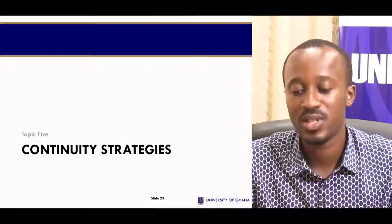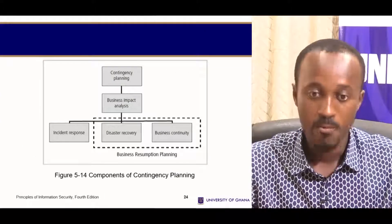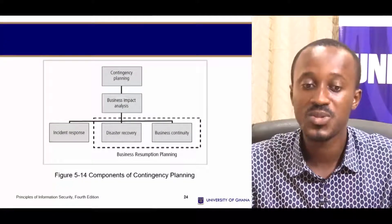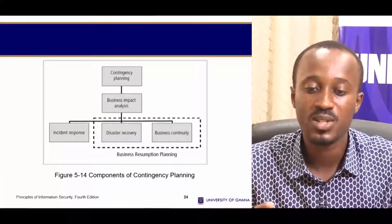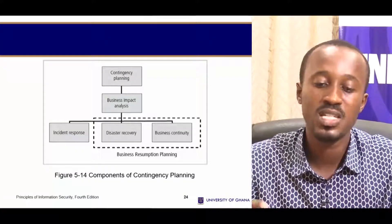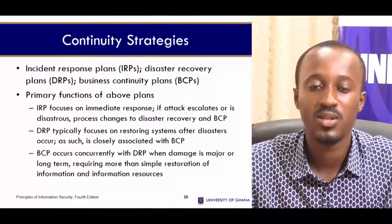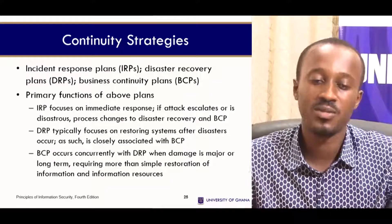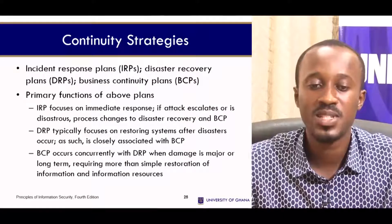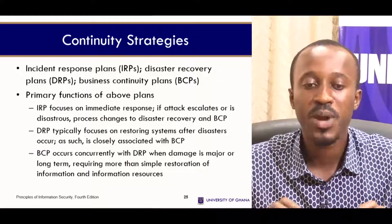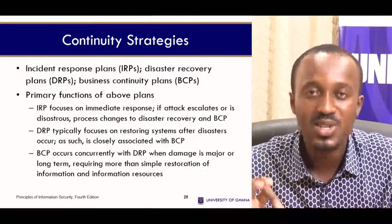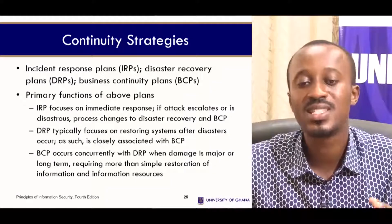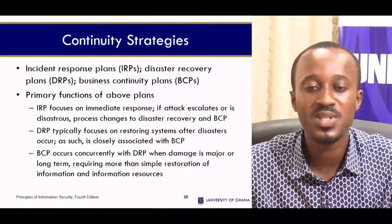Now let's look at continuity strategies. Under contingency planning we have the business impact analysis, which is split into incident response and disaster recovery — together known as business resumption planning. The incident response plan (IRP) and the business continuity plan (BCP) focus on immediate response. If an attack escalates or is disastrous, the process changes to disaster recovery and business continuity planning. The DRP typically focuses on restoring systems after disasters occur and is closely associated with the BCP. The BCP occurs concurrently with the DRP when damage is major or long-term, requiring more than simple restoration of information resources.